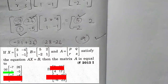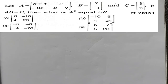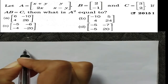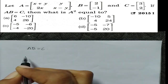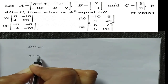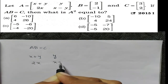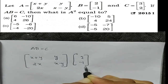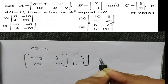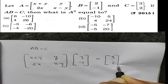The next question: AB equals C is the condition. The matrix has elements x plus y, y, 2x, x minus y, and we are given 2 minus 1 equals C.